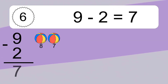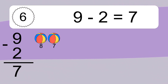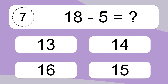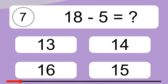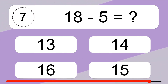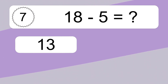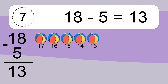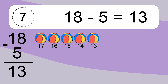18 minus 12 equals 7. Let's count it: 8, 7. 18 minus 5 equals what? 18 minus 5 equals 13. Let's count it: 17, 16, 15, 14, 13.